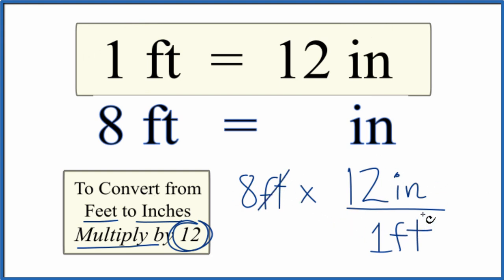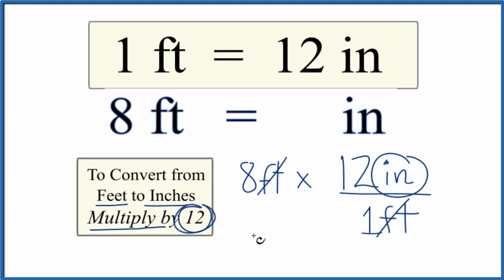We have feet on the bottom and the top. They cancel out. We're left with inches. So 8 times 12 inches. 96 inches. So once again 8 feet equals 96 inches.